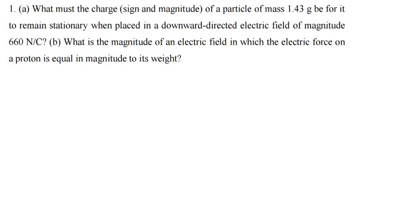In this tutorial, we are going to talk about electric field and electric forces practice questions. I've got a number of questions here. The first question is: what must be the charge — the sign and the magnitude — of a particle of mass 1.43 grams, for it to remain stationary when placed in a downward direction electric field of magnitude 660 newtons per coulomb? Then Part B: what is the magnitude of an electric field in which the electric force on a proton is equal in magnitude to its weight?